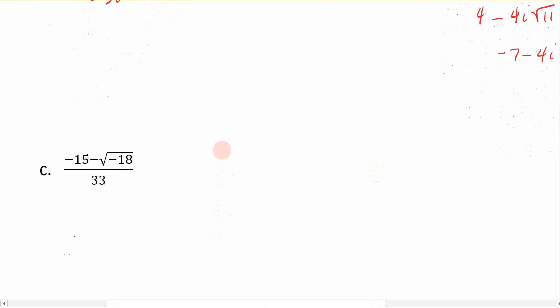The last one we want to look at is this division problem. We have real numbers in the denominator, so that's going to be okay. We just need to figure out how to handle this numerator. We want to start by rewriting the negative portion, the negative radical, as negative 15 minus i times the square root of 18, all divided by 33. So we took care of the negative number and brought it out as an i.